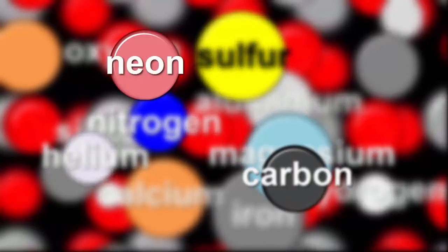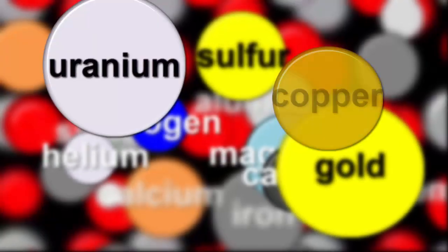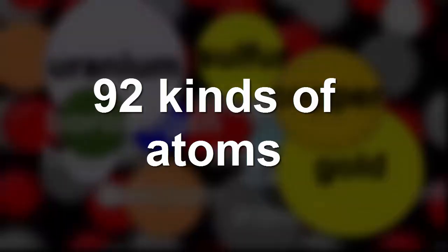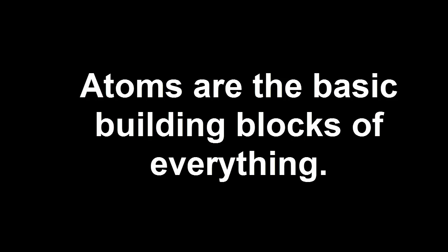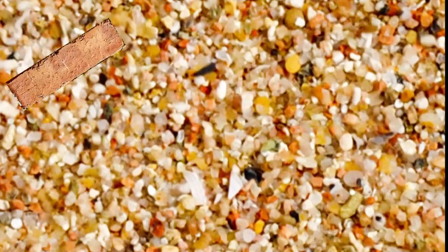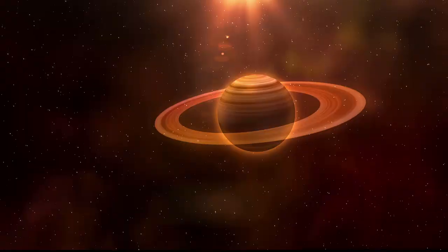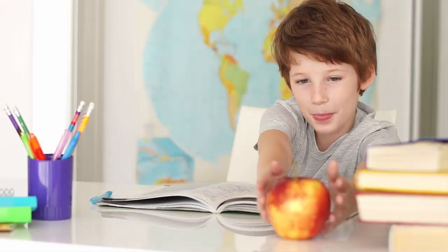Have you heard of any of these kinds of atoms before? In the whole world, scientists have discovered 92 different kinds of atoms. If we magnified anything, we would find that it's made of some combination of these 92 kinds. That means that atoms are the basic building blocks of everything — that includes sand, a brick, a big thing like a planet, a small thing like a flea, and all the things that you can see here.